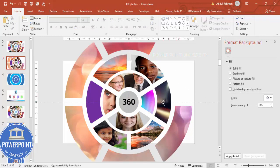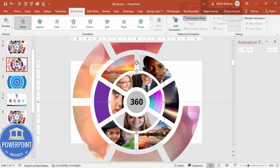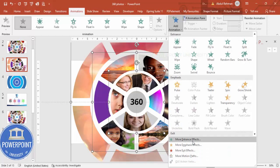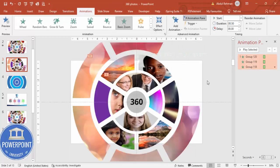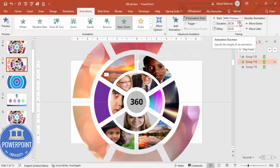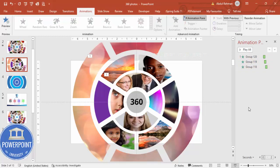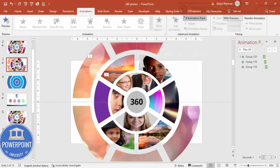Once the design is complete, add animation effects. Go to Animations and enable the Animation Pane. Select the second, third, and fourth ring shapes, click Add Animation, and choose Basic Zoom. Set a slight delay on each ring so they animate in sequence. When you play the slide, the rings zoom in one after another. You can apply the same animation to additional elements as well.